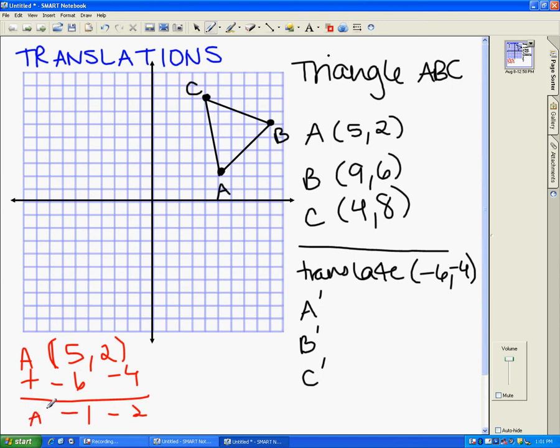So this means that a prime, the new point, is negative 1, negative 2. So I'm going to write that down here, just so that we have it right here. And then I'm going to keep going, and I'm going to do b prime next.